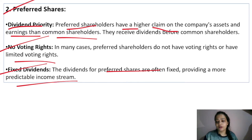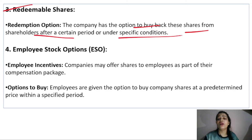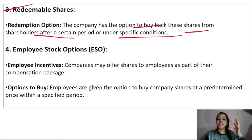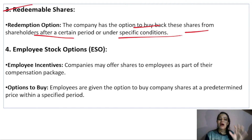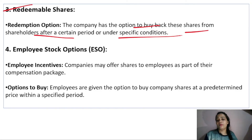The next type is redeemable shares. Here, the company has the option to buy back the shares from shareholders after a certain period or under specific conditions. Redeemable means the company issued the shares with the condition that it will buy them back in the future — for example, after 5 years, the company will buy them back at a fixed price. This is what redeemable shares are.